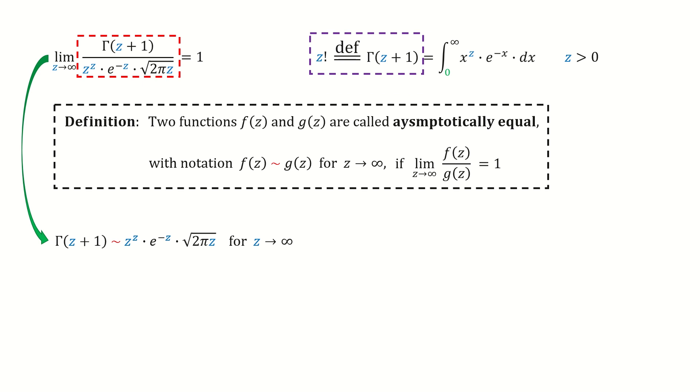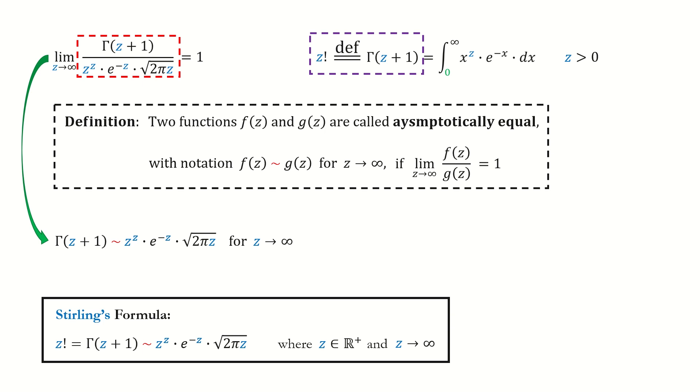Finally, we use this property. So we are done for Stirling's formula.